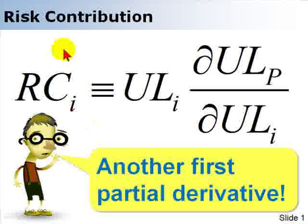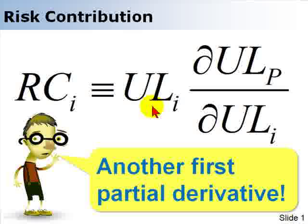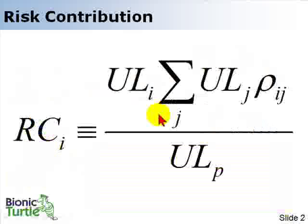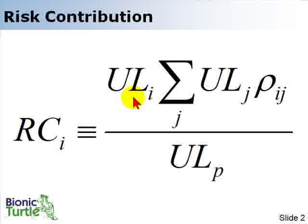Risk contribution is the incremental risk that a single asset exposure contributes to total portfolio risk. We have the change in unexpected loss for the portfolio given a small change in unexpected loss for the individual credit asset, and it's denominated or measured in units of unexpected loss of the credit asset — that's the first partial derivative format. In practical terms, we use this formula where the risk contribution of the individual credit asset is a function of the asset's unexpected loss multiplied by the summation of the product of all of the other assets' unexpected losses in the portfolio multiplied by the respective pairwise correlation, everything divided by total portfolio loss.